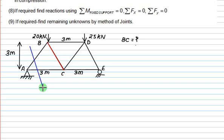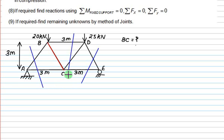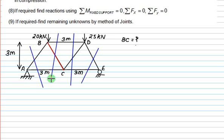Now imagine a section plane. The first condition is that your section plane must cut the required member BC. Some planes do not cut member BC, so those are not useful section planes. We can have a section plane like this — and this is useful. How many members does it cut? Three members are cut. If you consider another plane, it would cut four members, which is not preferred.